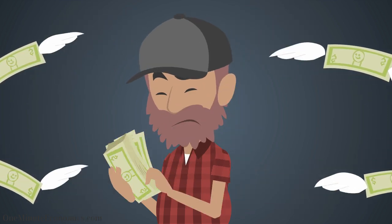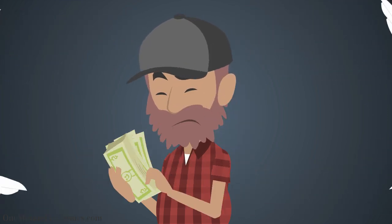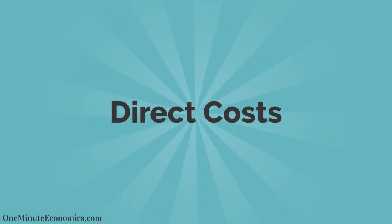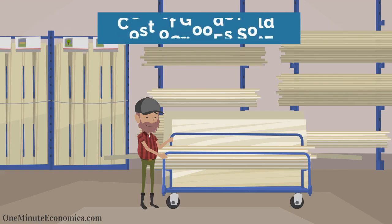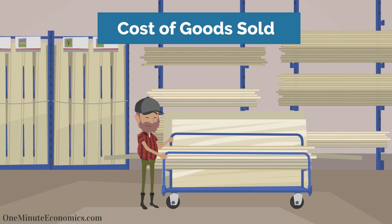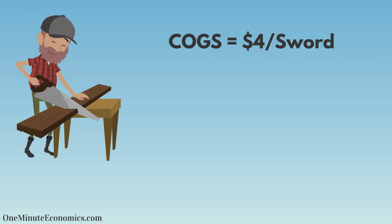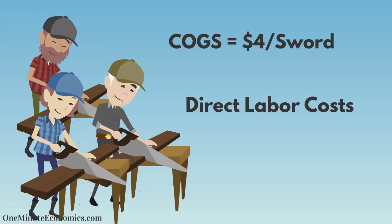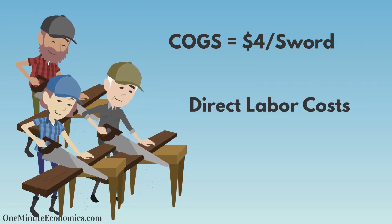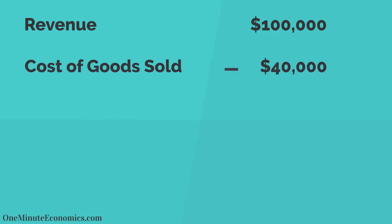Unfortunately he doesn't just keep the entire amount. First of all, there are direct costs involved in making the swords. These are called COGS, as in cost of goods sold. In his case, they amount to four dollars per sword that he spends on materials. If he had employees, there would be direct labor costs as well.